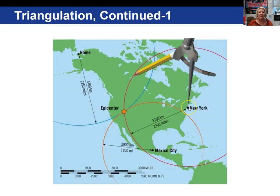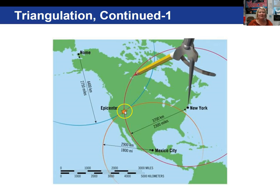So now with that distance, we take a compass, place the point at the recording station in New York, measure 3,700 kilometers using the scale, and draw a circle around New York. You repeat the same process for Nome and Mexico City. Where these three circles intersect is the epicenter of the earthquake. The calculated distance from Nome is 4,400 kilometers, and from Mexico City is 2,900 kilometers.